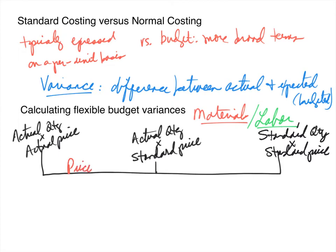For materials, the difference in pegs two and three is called the quantity variance. For labor, the difference in pegs one and two is typically called the rate variance, and the difference in pegs two and three is called the efficiency variance. We can use the same chart for both.